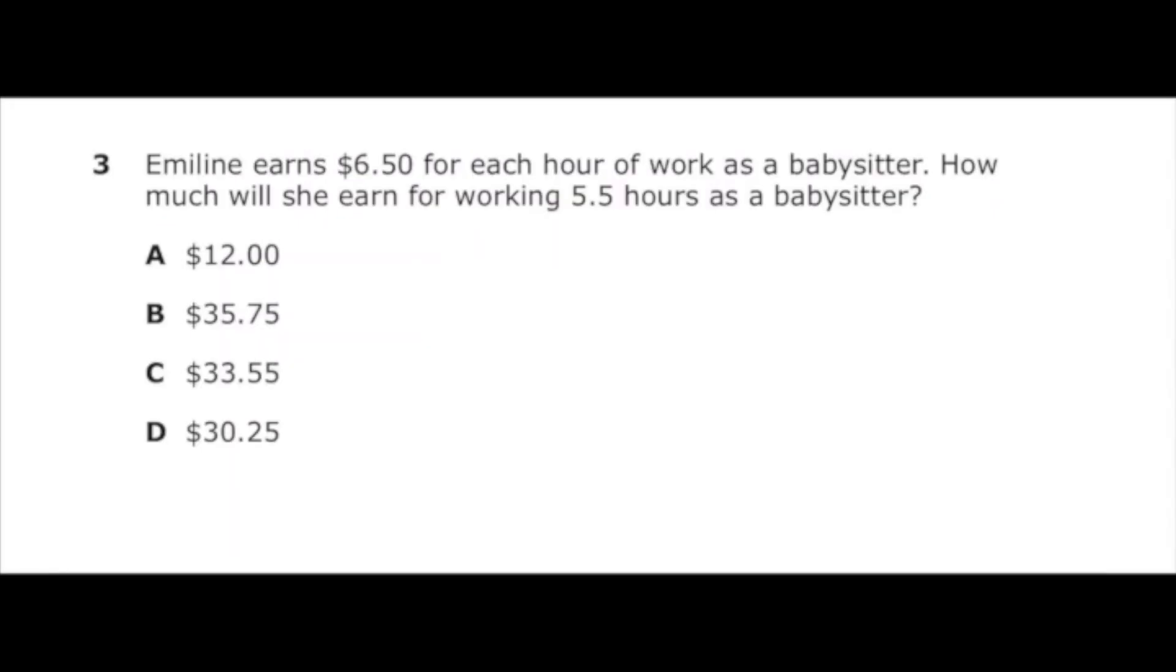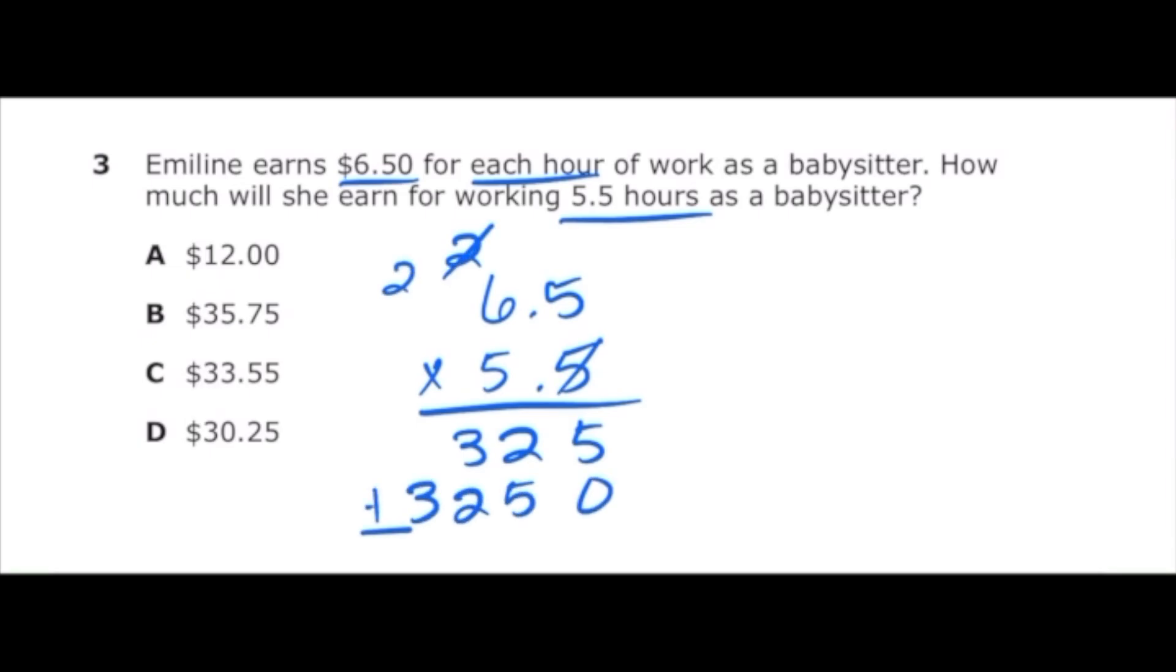Number three from the 2022 sixth grade math STAR test says Emmeline earned $6.50 for each hour of work as a babysitter. How much will she earn for working 5.5 hours as a babysitter? If she's earning $6.50 an hour, all we need to do is multiply 6.50 times 5.5 to get the amount of money she's going to earn. Just to make it a little bit easier, I'm going to change 6.50 to 6.5 and multiply that by 5.5. Once I do that, I should get $35.75, which is letter B.